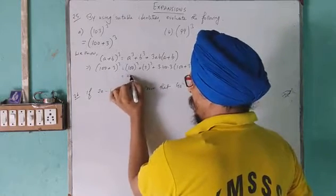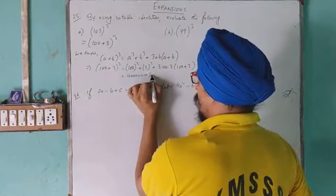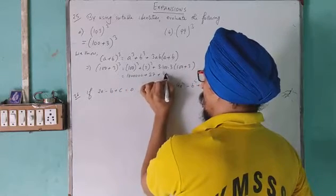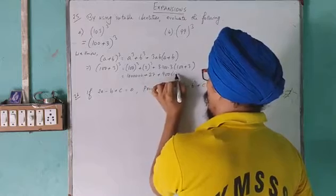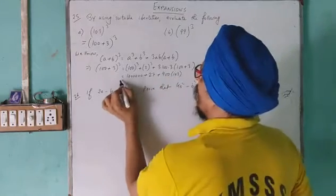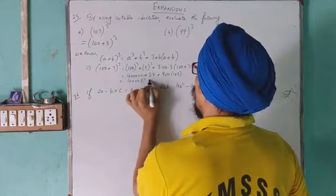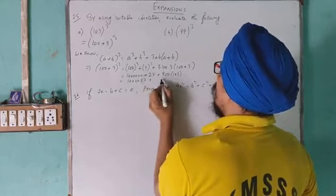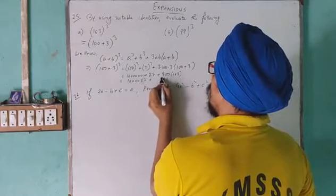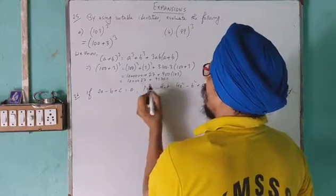So it will be 100,000 plus 27 plus 900 into 103. So you see, it will be 100,027 plus, comment jo aakta hai, 100, 9 times 3 is 27, 900 times 2 is 1800, 9 times 1 is 9.